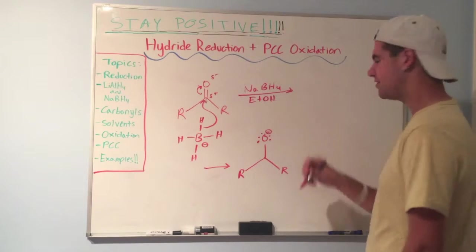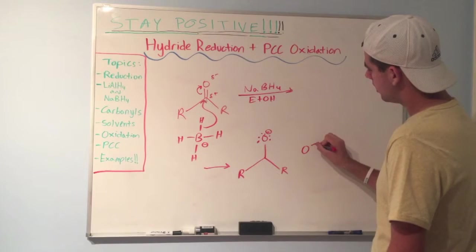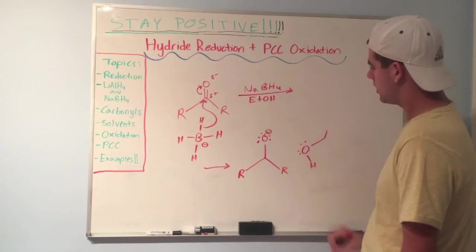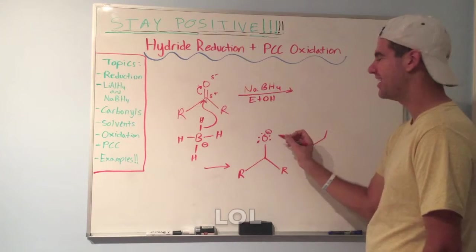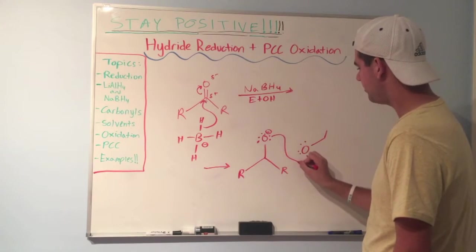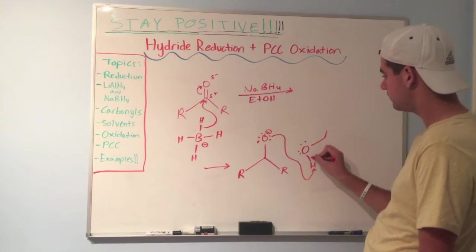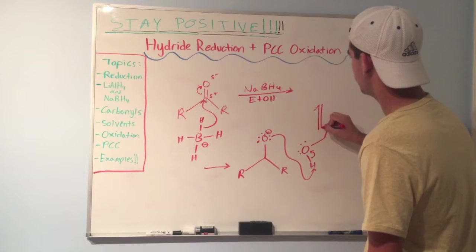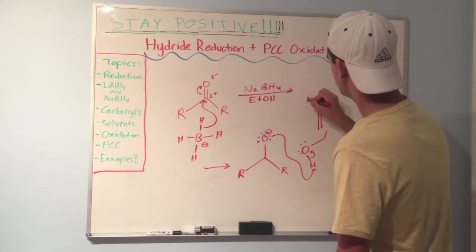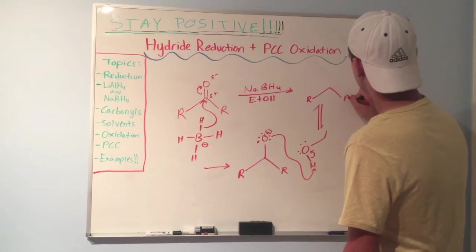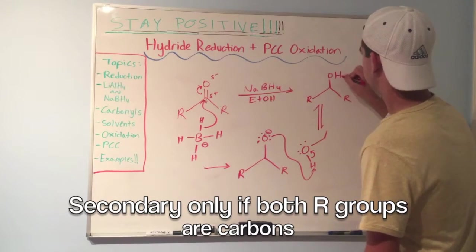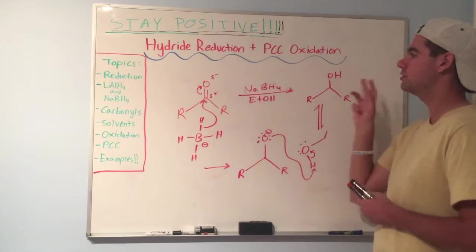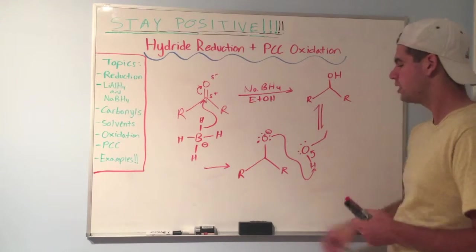But now the problem is we have an oxygen that's unhappy and unstable. That's where the polar protic solvent comes in. And we have ethanol floating around. So here's ethanol. The negative oxygen can grab this hydrogen right here, deprotonate ethanol, and give us our final product. Remember double arrows comes to acid-base chemistry. Our final product is a secondary alcohol. Look at that. So this is exactly how we reduce a carbonyl to an alcohol using sodium borohydride.